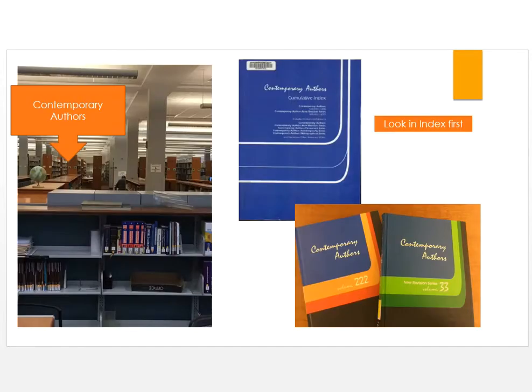Now that you have qualified the book, you need to show that the author is qualified to write such a book. Again, I'm going to show you how, by order of preference. The first place to look is Contemporary Authors. These are located behind the reference desk of the library across from Book Review Digest. Look for the name in the index — it will tell you which volume to look in.